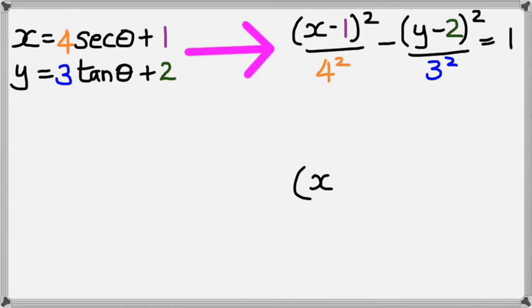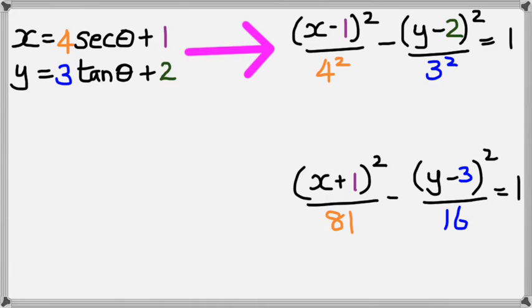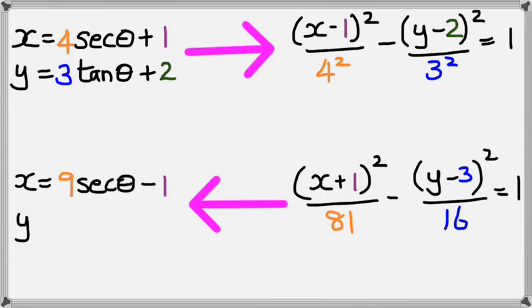So looking backwards now, let's say we have x plus 1 squared, divided by 81, take away y minus 3 squared, divided by 16, and if that equals 1. You can kind of predict what this is going to be. Have a go. I'll just work slowly. So you're going to get x is equal to square root of 81, which is 9, sec theta, and because it's plus 1 inside the bracket, on the outside it's going to be minus 1, and y is going to equal square root of 16, which is 4, tan theta, and because it's minus 3 inside the bracket, outside it's going to be plus 3.